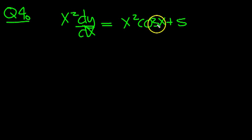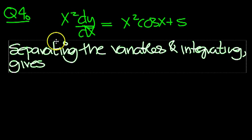x squared dy dx equals x squared cos x plus 5. So let's have a look at this. We need to separate the variables and integrate. Let's write that down.